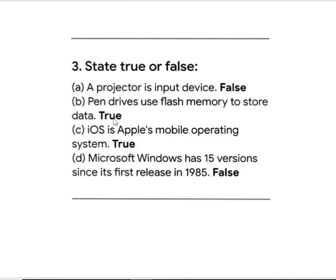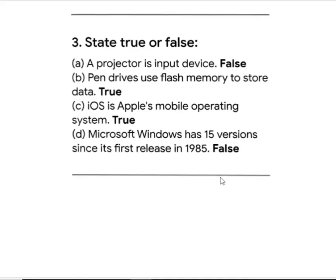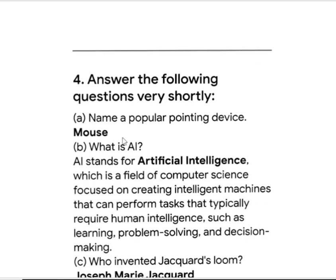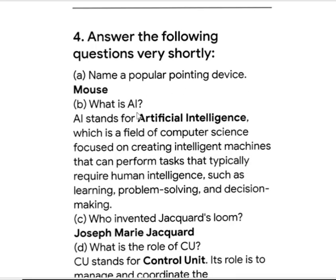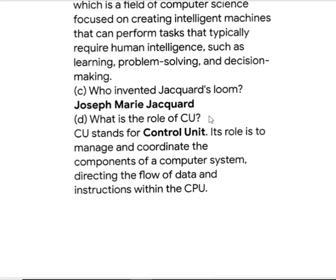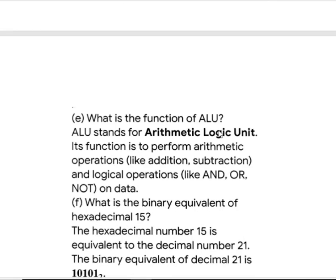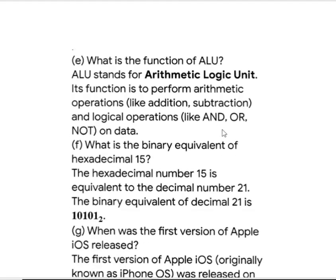For true and false: first question is false, second question B is true, then true, then false. Name the popular devices: mouse. What is AI? AI stands for Artificial Intelligence. Who invented it? What is CPU? CPU stands for Control Unit and ALU — Arithmetic Logical Unit.